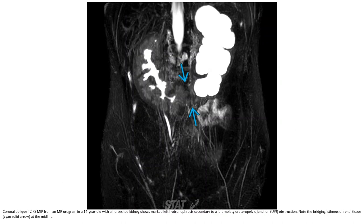T2 MRI urogram in a 14-year-old with a crossed fused ectopia shows marked left hydronephrosis, which can be due to a left moiety ureteropelvic junction obstruction. Note the bridging isthmus of renal tissue at the midline.